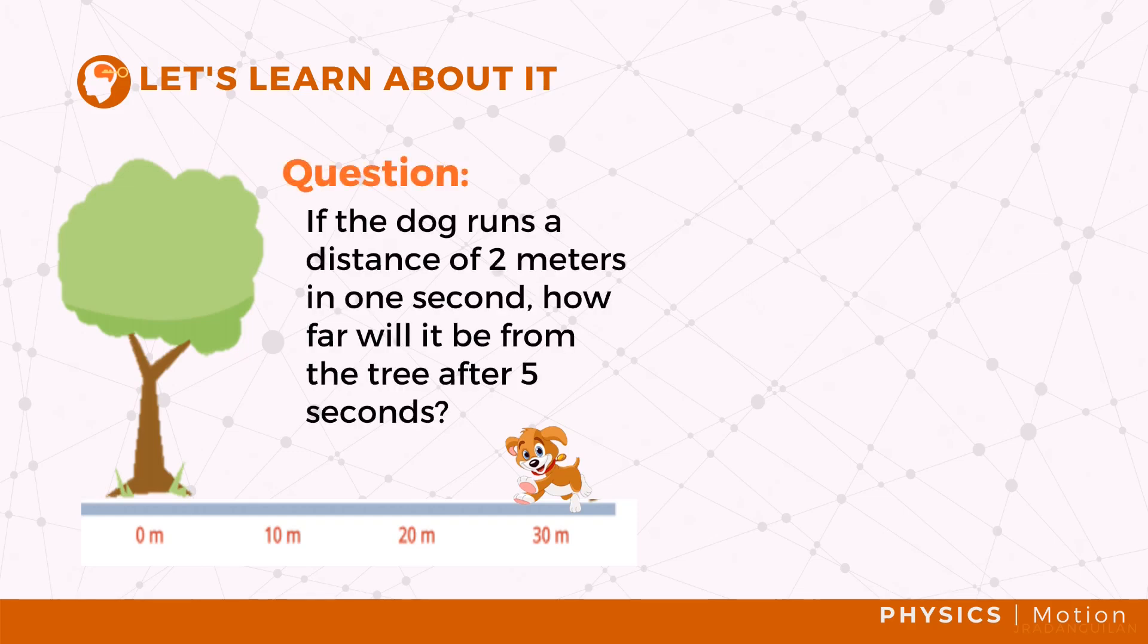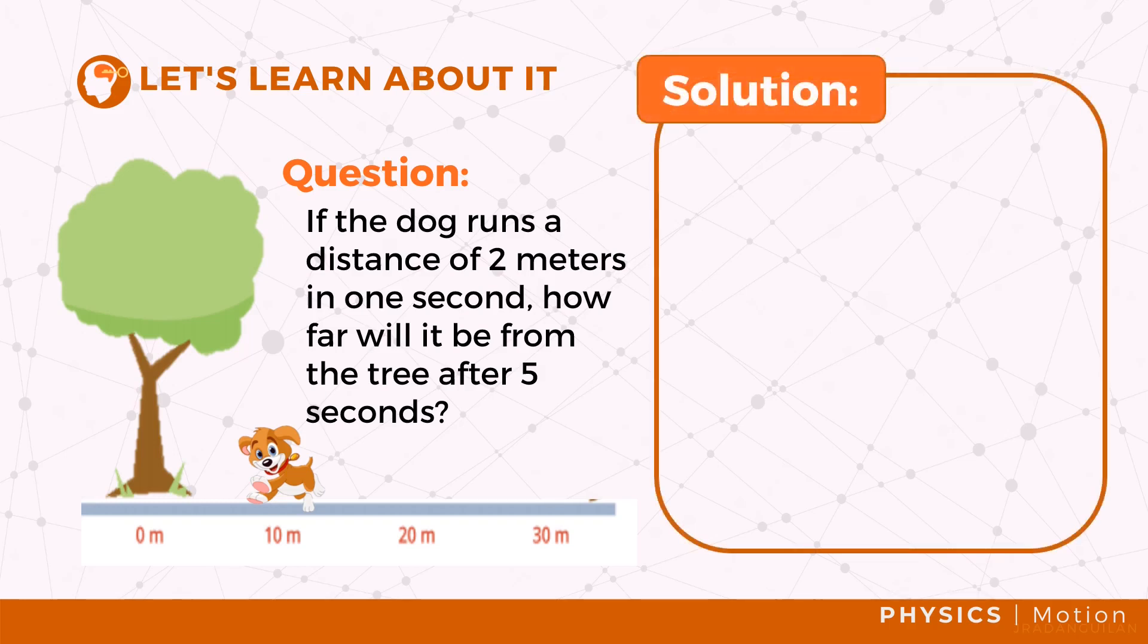Let's try this example. If the dog runs a distance of two meters in one second, how far will it be from the tree after five seconds? To solve this, let's identify first what are the given. The dog travels a distance of two meters in a span of one second. Another time is given which is equal to five seconds.